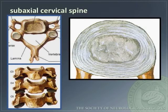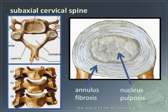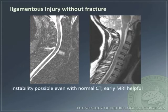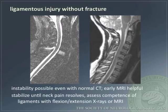The subaxial cervical spine consists of C3 to C7. Here are diagrams showing important anatomic landmarks, as well as the annulus fibrosis and nucleus pulposus, which comprise the disc. Here is an example of ligamentous injury without fracture. In this situation, instability is possible even with a normal CT, and thus an early MRI is helpful. The goal is to stabilize the neck until pain resolves and assess ligament competence with flexion-extension films or MRI.